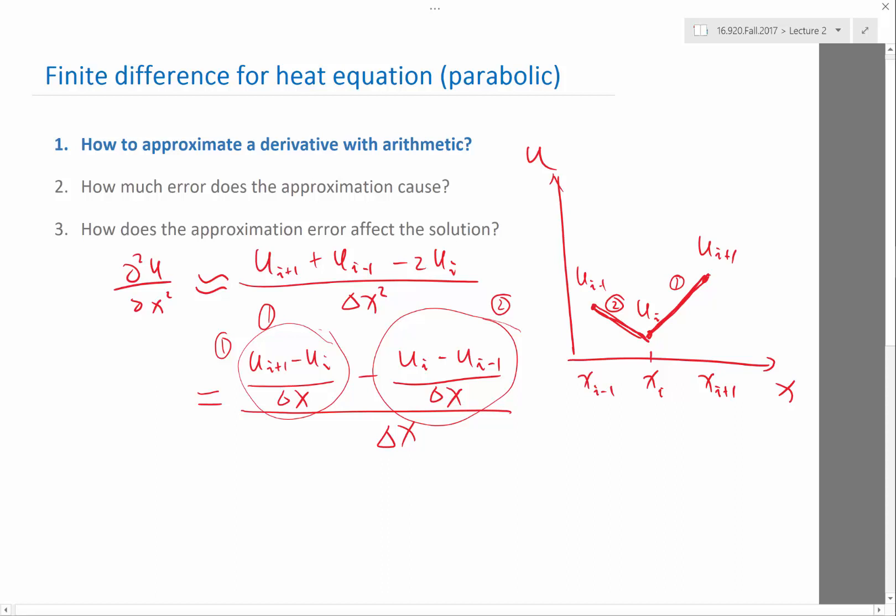The second order derivative is saying, what is the difference between the slope on the right-hand side and the slope on the left-hand side? Then divide it by the difference between the center of these two slopes. One center is halfway between x_i and x_i+1. Another is halfway between x_i-1 and x_i. The difference between them is exactly delta x.